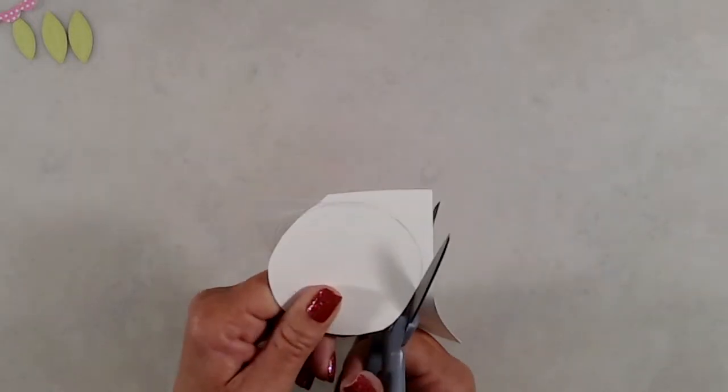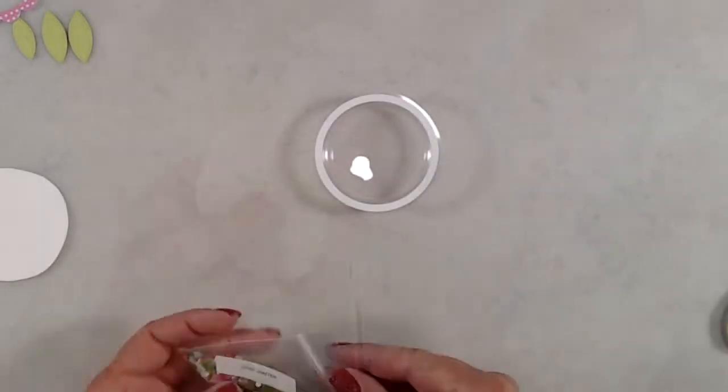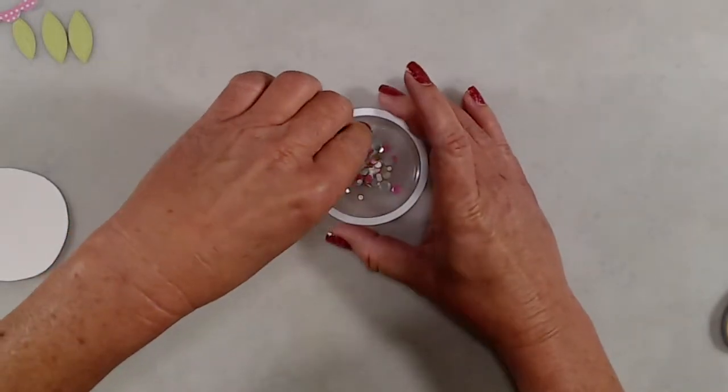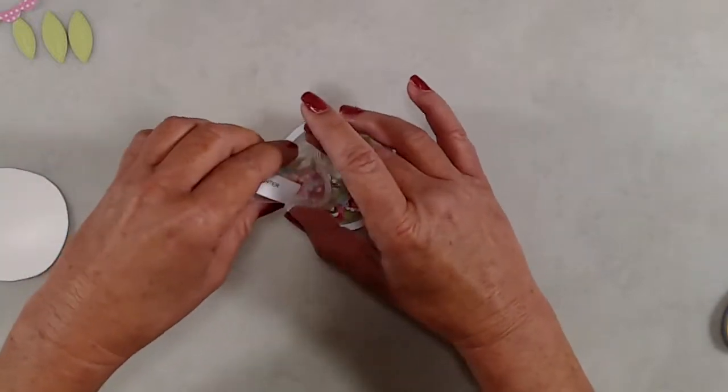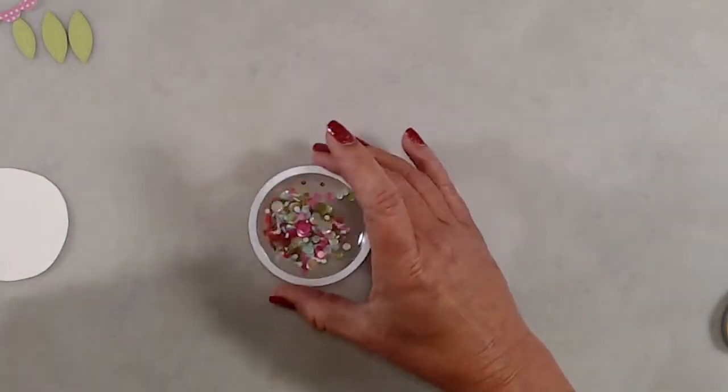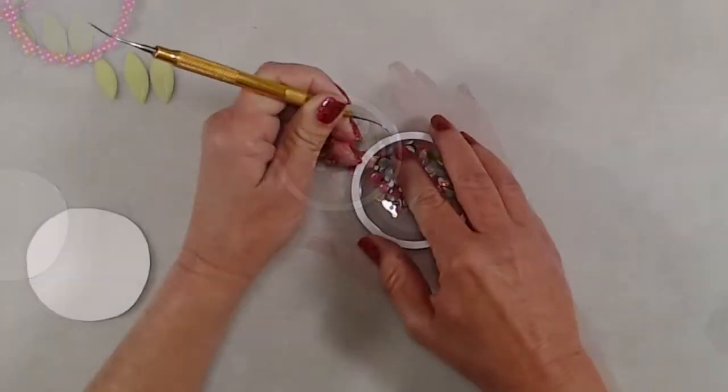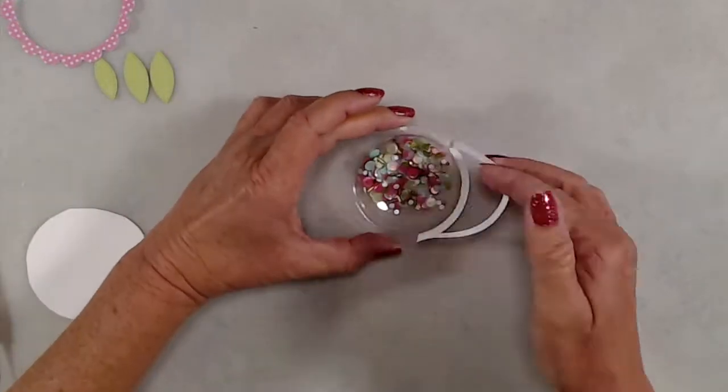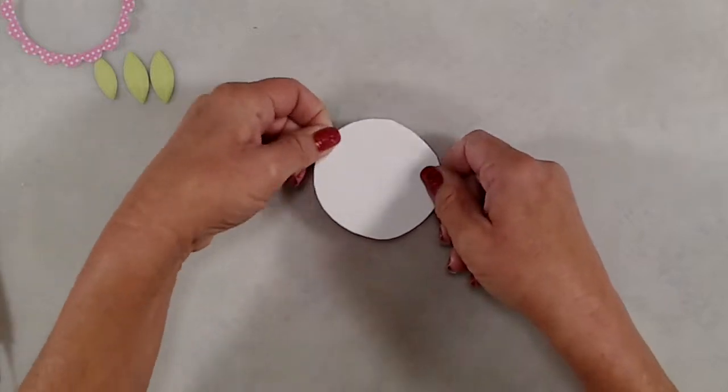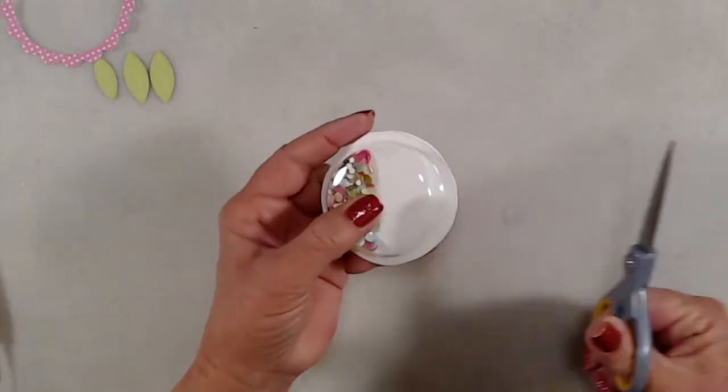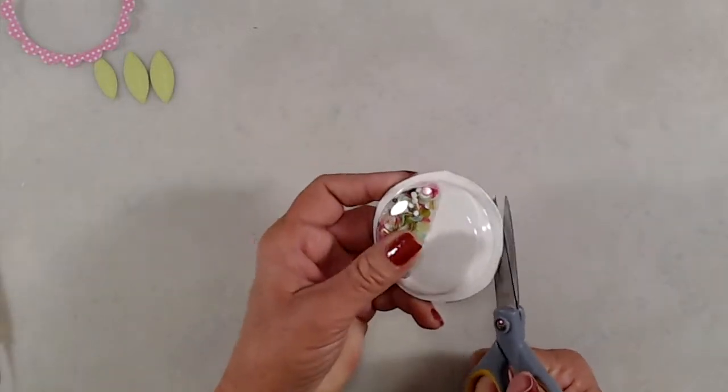The bobble bubbles do have a self-adhesive backing on them, so once I had my Cozy Winter sequin mix added into my bubble, I used a dental pick to remove that release paper and then I just made sure to press around the edge very well once I placed my white cardstock on top of that. Anything that was hanging over the edge, I just kind of edged in there with my scissors to cut that off.